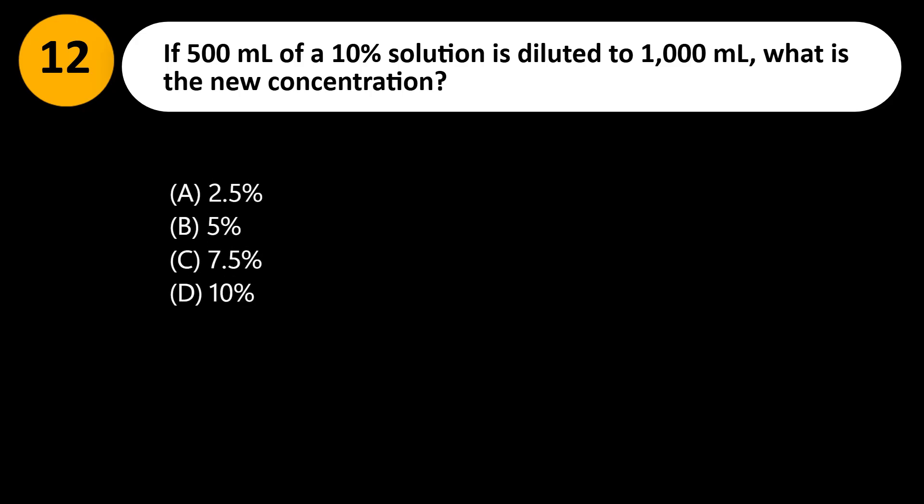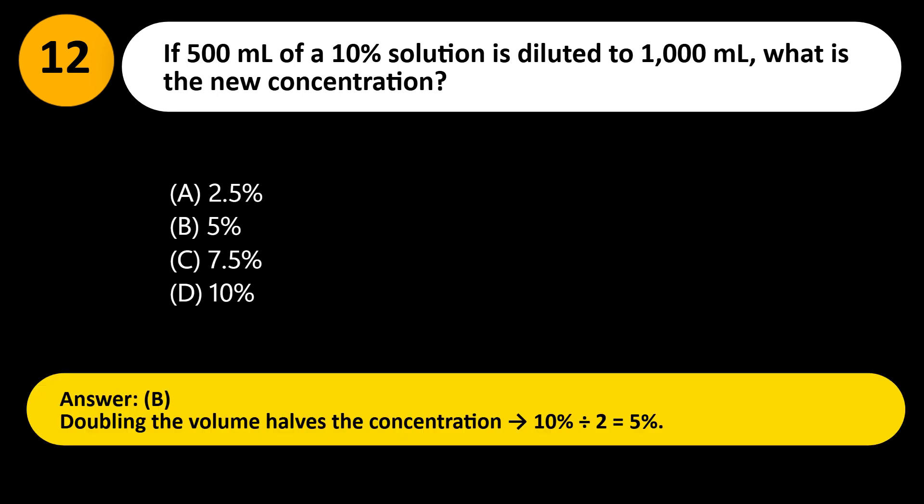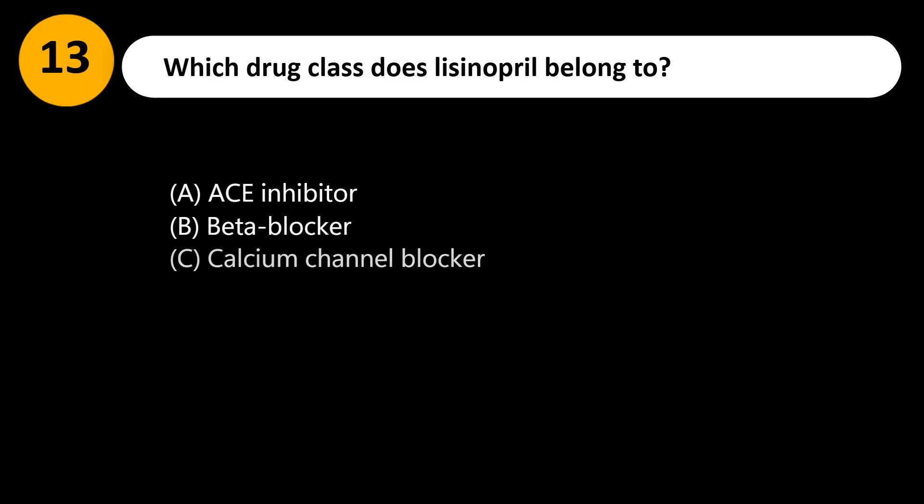If 500 milliliters of a 10% solution is diluted to 1000 milliliters, what is the new concentration? A. 2.5%. B. 5%. C. 7.5%. D. 10%. Answer: B. Doubling the volume halves the concentration: 10% divided by 2 equals 5%.